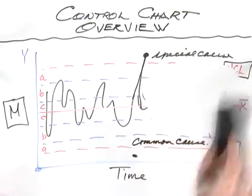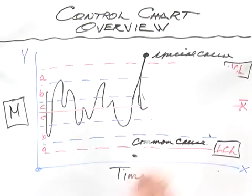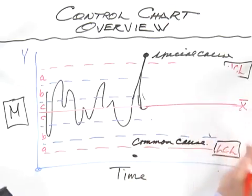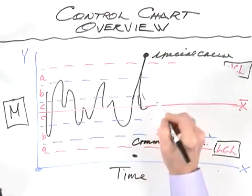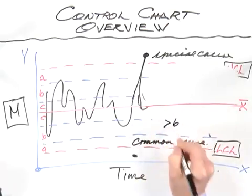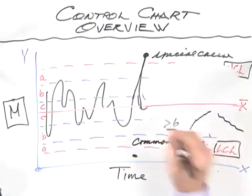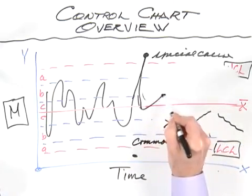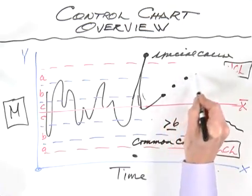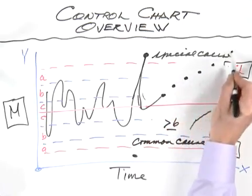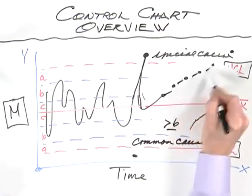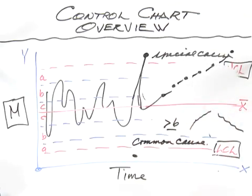The other classic test that is used to apply statistical thinking to the chart is whether or not you have a trend. A trend is when you have six or more data points constantly going up or constantly going down. We would see data one, two, three, four, five, six. That would be an upward trend and similarly you could have a downward trend.